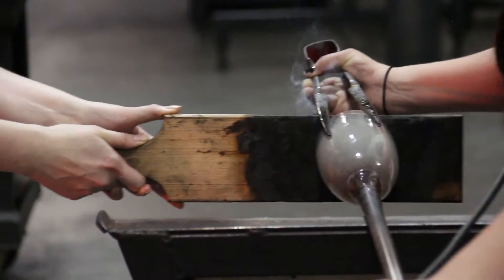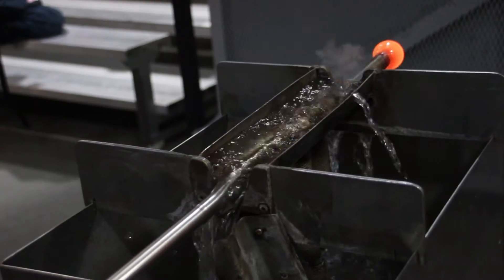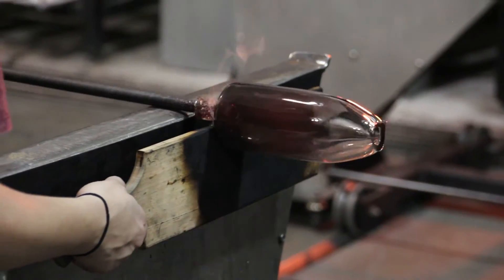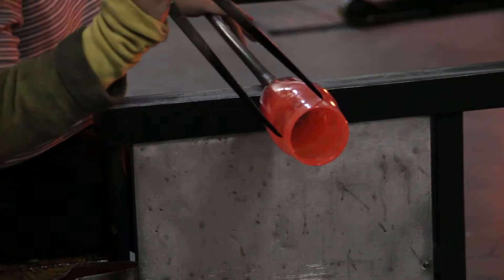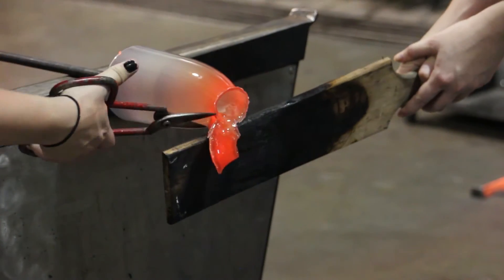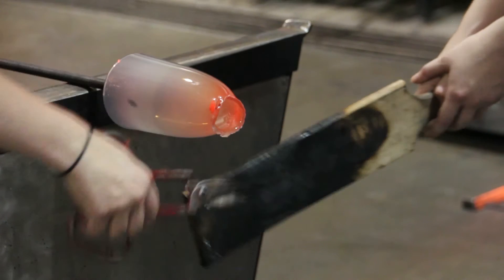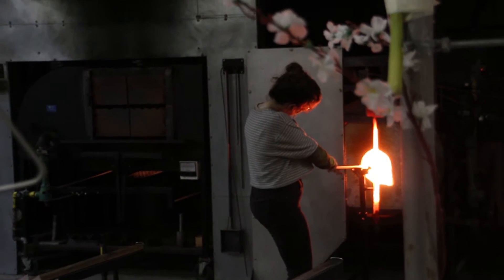The way you start making a cup is you have to block it with a wooden block that's constantly in water, so that the temperature of the glass doesn't burn the wood. That gives it a nice controllable shape. Throughout this whole process you're fighting the glass as it cools. You want to work the glass when it's really hot, and the glass naturally wants to cool, so it gets to a point where you can't work it and you have to stick it back into heat to regulate the temperature.